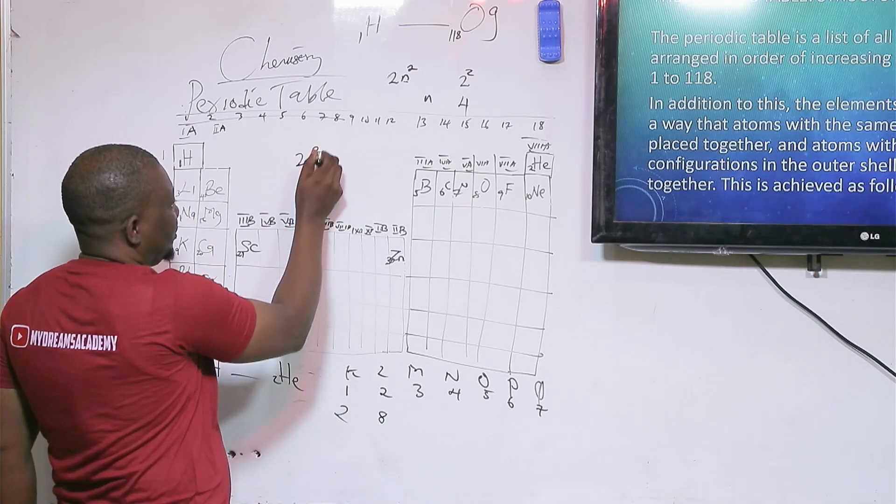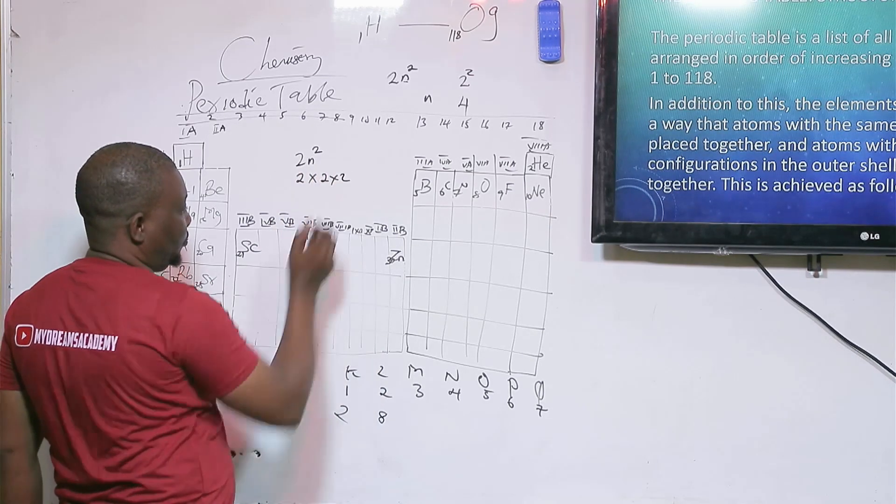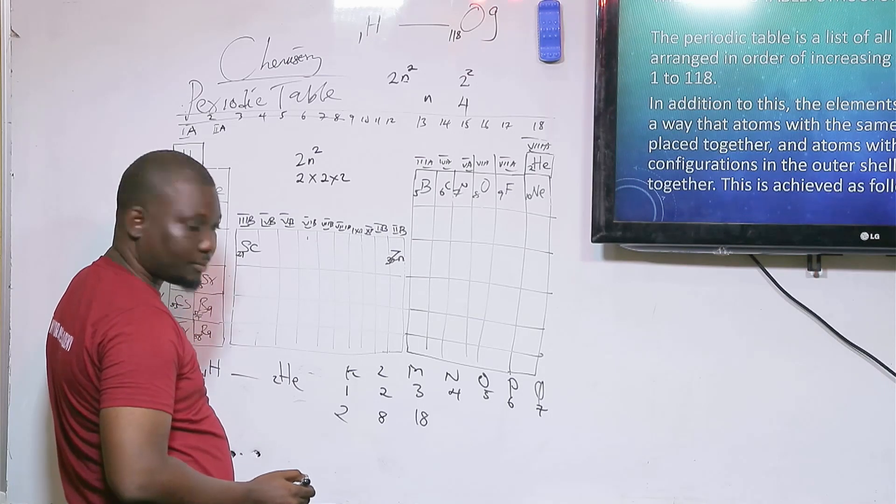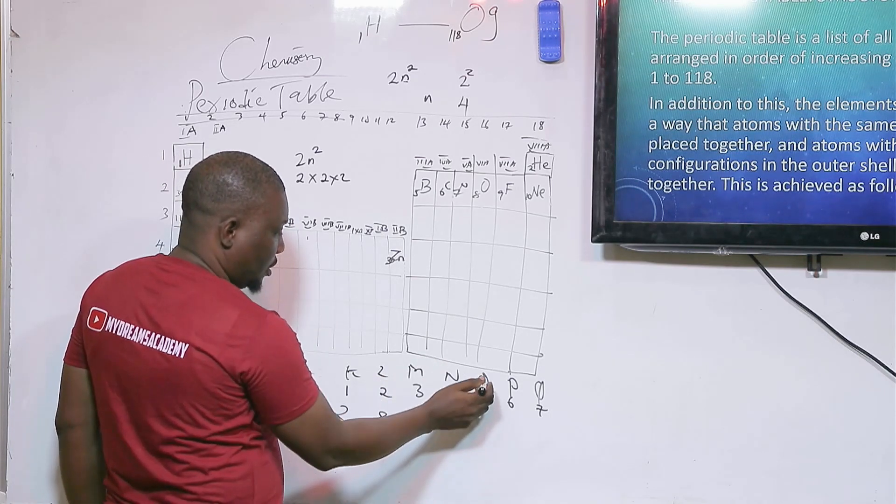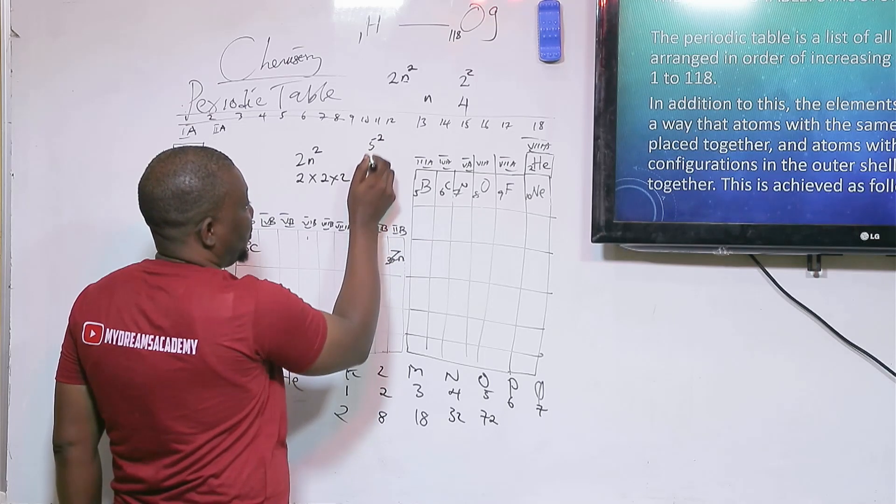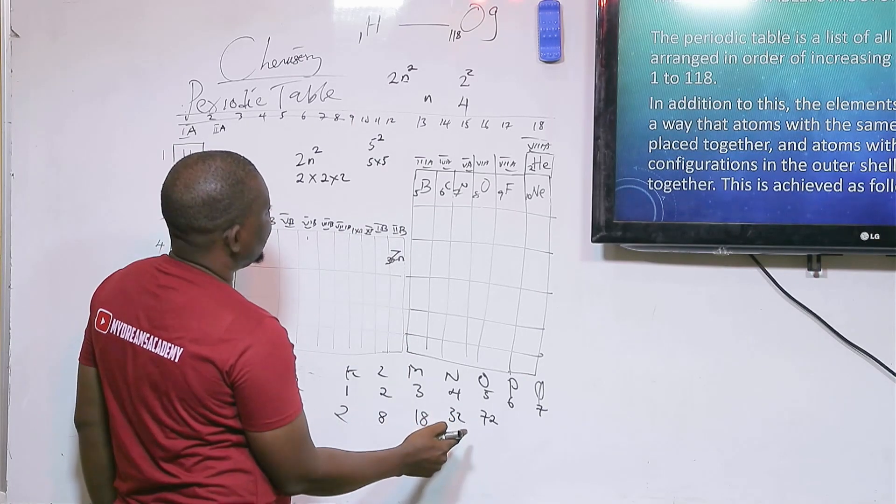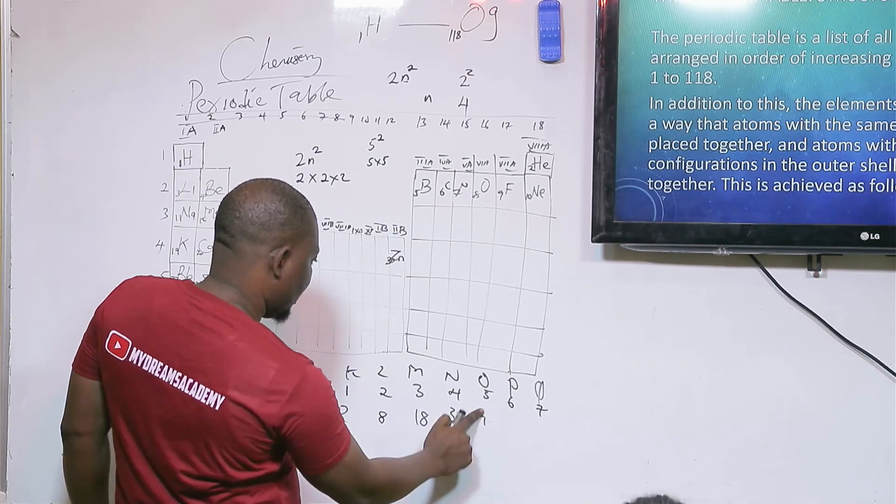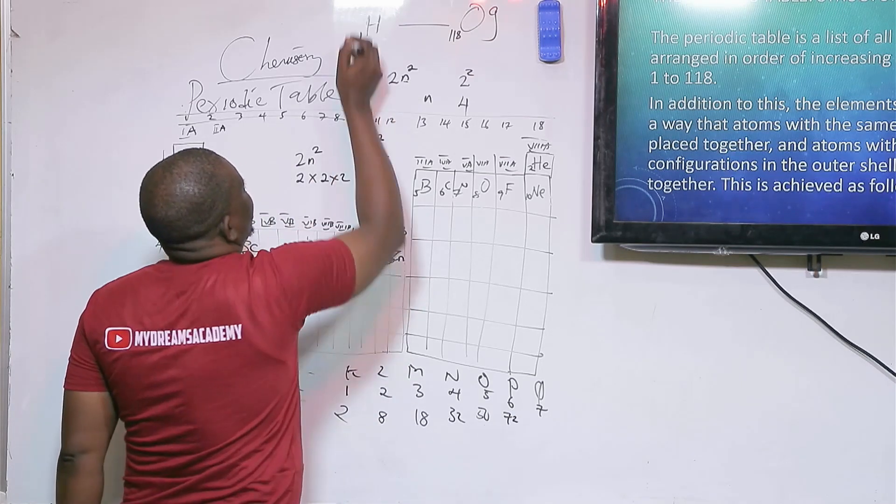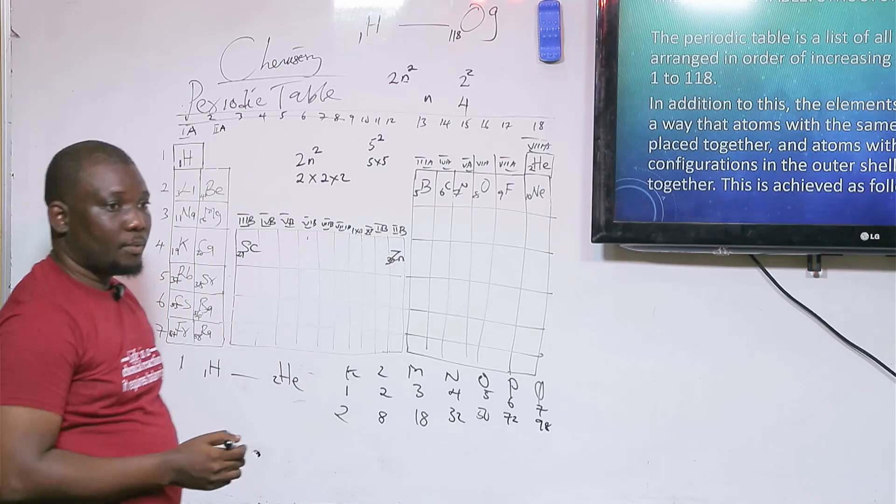M shell will be 18 electrons. N shell will be 32. For O shell, we have 5 squared times 2: 5 times 5 is 25, 25 times 2 is 50. P shell is 6 squared times 2: 6 times 6 is 36, 36 times 2 is 72. And Q shell is 98.